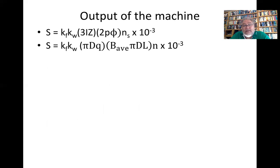So that becomes k_f k_w πDQ B_average × πDL × n × 10^-3 by rearranging. And then we get k_f k_w = π² B_average D² L × Q × n_s × 10^-3.